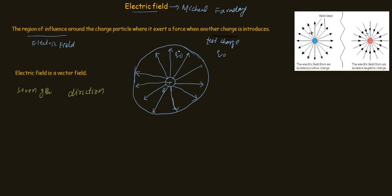The force on the charge Q naught represents the strength of the electric field at that point, and the direction of Q naught shows the direction of the electric field. A single vector quantity which represents both the strength and the direction of the electric field at a specific point is known as the electric field strength.